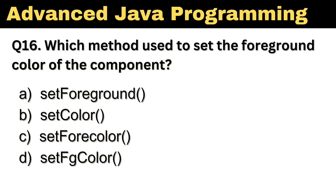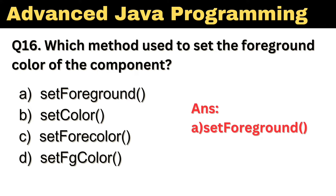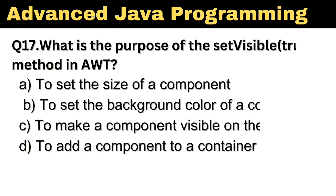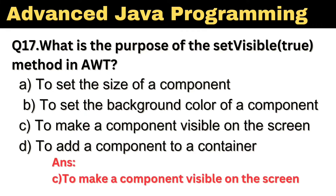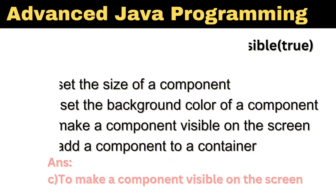Question No. 16: Which method is used to set the foreground color of the component? The right answer, Option A, SetForeground. Question No. 17: What is the purpose of the setVisible(true) method in AWT? The right answer, Option C, To make a component visible on the screen.